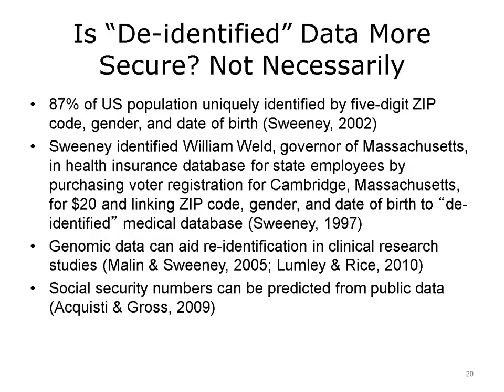When data is referred to as de-identified, it means that personally identifying characteristics — such as name, address, or other fields that make up personal health information — have been removed. However, de-identification may not always be as secure as intended. Sweeney brought this to light in a widely cited study completed during her Ph.D. at MIT, in which she essentially identified William Weld, the governor of Massachusetts at the time, through information found by linking publicly available data sources. Her research also showed that 87% of the U.S. population could be uniquely identified by their five-digit zip code, gender, and date of birth.